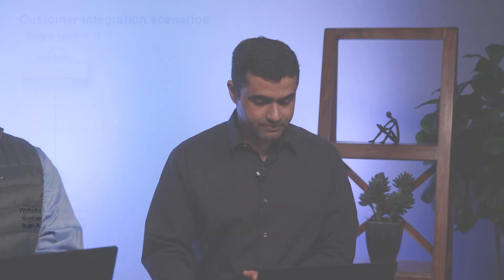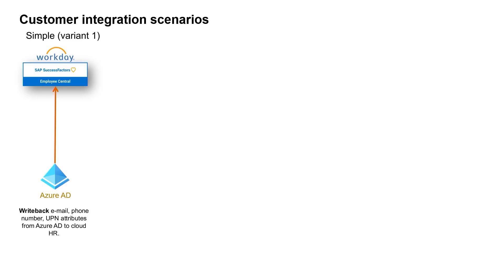That's a good question. The first step is to identify what type of provisioning integration you would like to configure. There are four different types of HR integrations that one can configure with Azure AD. Let's take a close look at each integration scenario. The first integration scenario is what we call the HR write-back scenario. Use this integration if you want to write back IT-managed attributes like email, username, and phone to the HR app. This integration only updates attributes in your HR app.